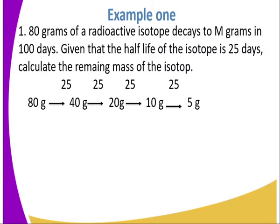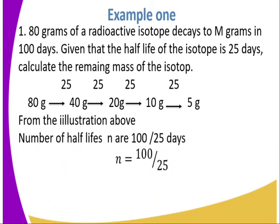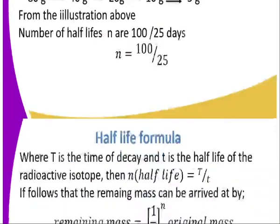This process continues until the isotope becomes stable. The time of decay is 100 days and after each 25 days it decays by half. To find the number of half-lives (n), we divide the time of decay by the half-life: n = 100 ÷ 25 = 4 half-lives. That is, we have the first, second, third, and fourth half-life, amounting to a total of 100 days.